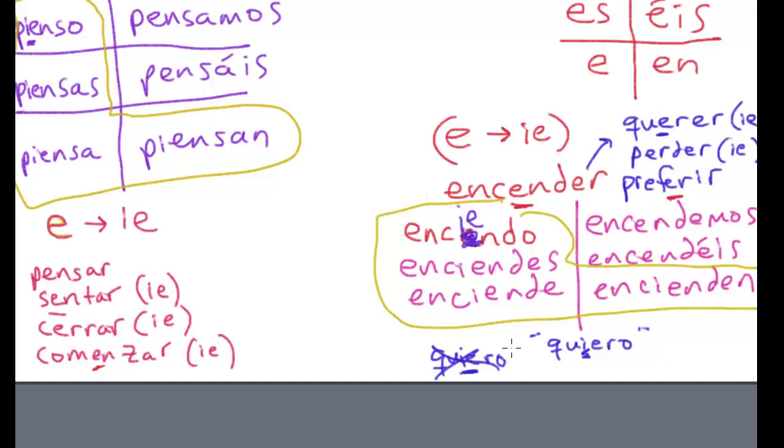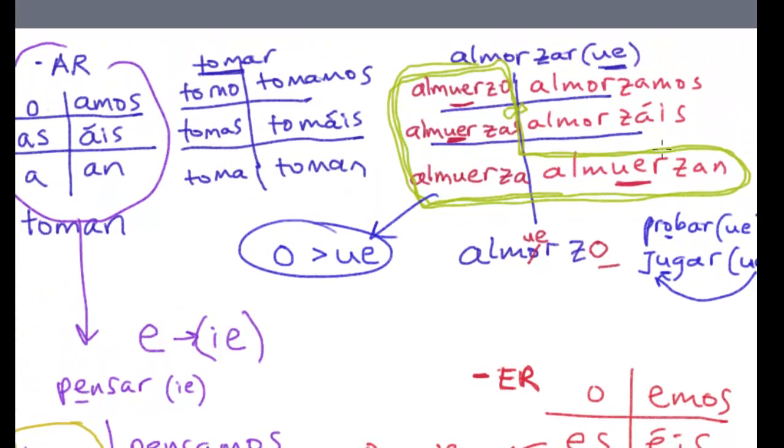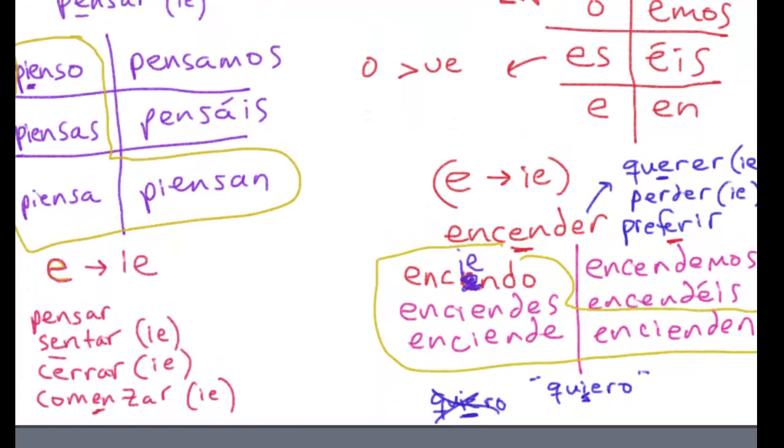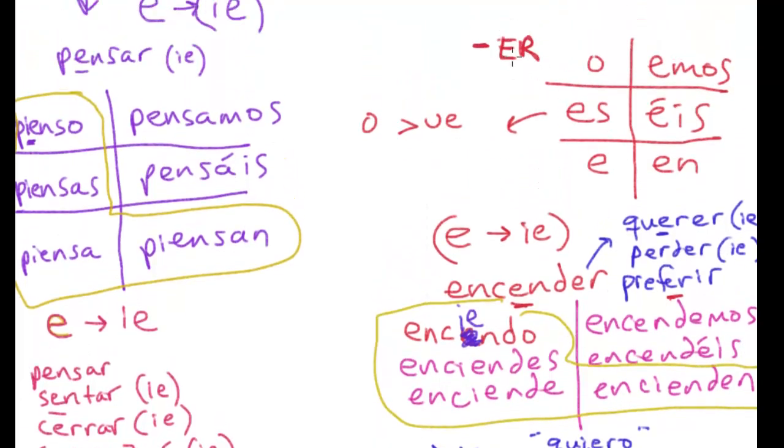There is one other thing to look at here, and that's the O to UE change. We've seen that with almorzar, probar, and jugar, and there are many others that are -ar verbs. But an -er verb that has this change—a common one is volver, to return. Volver is a stem-changing verb and will have a stem change in these forms.